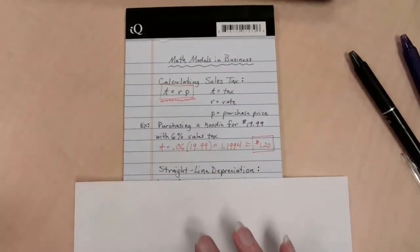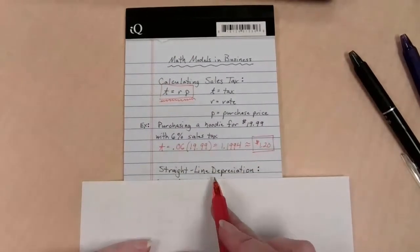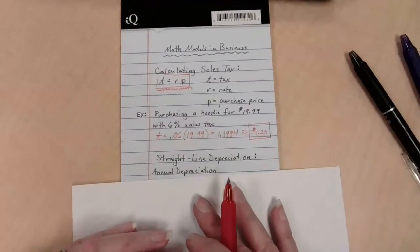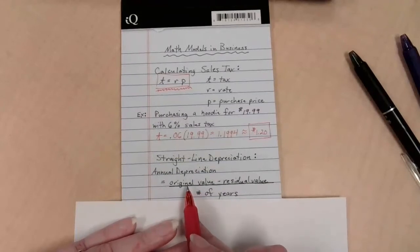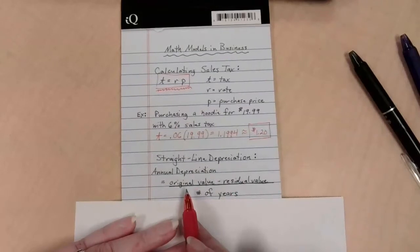Next up is the idea of something called straight line depreciation. Now, depreciate is to lose value. And so straight line indicates that we'd be losing the same amount of value consistently as we go dropping in value. Annual depreciation can be found by just looking at the difference between what this thing used to be worth and what is it worth now. The residual value is the value that it currently has, the value left behind, compared to the original. And if I take my amount of my loss over how many years, that's going to give me how much I'm losing in value every single year.